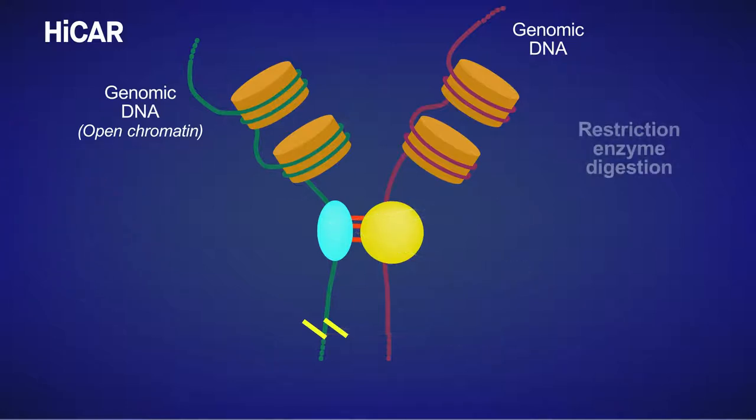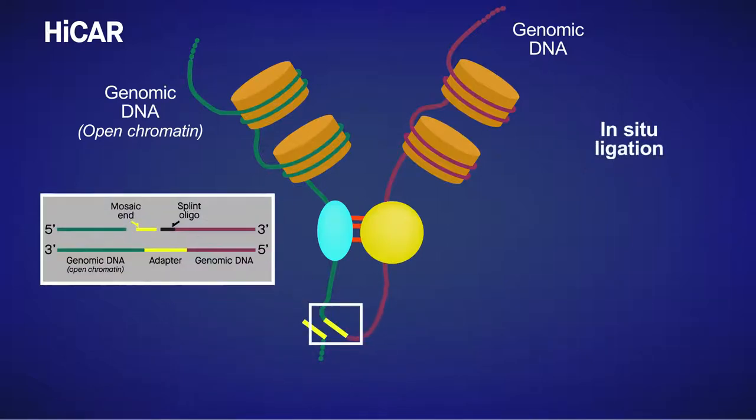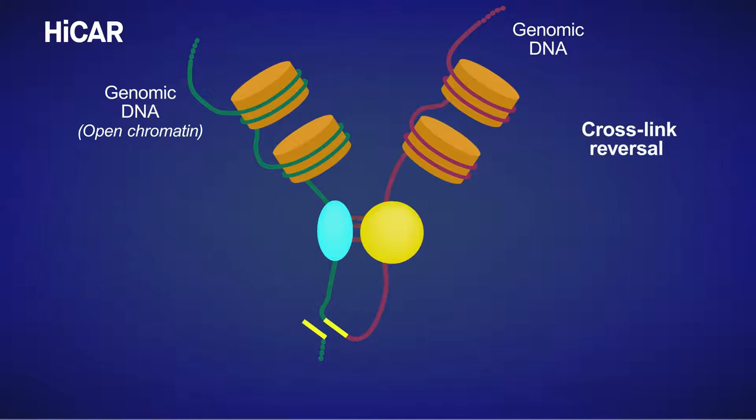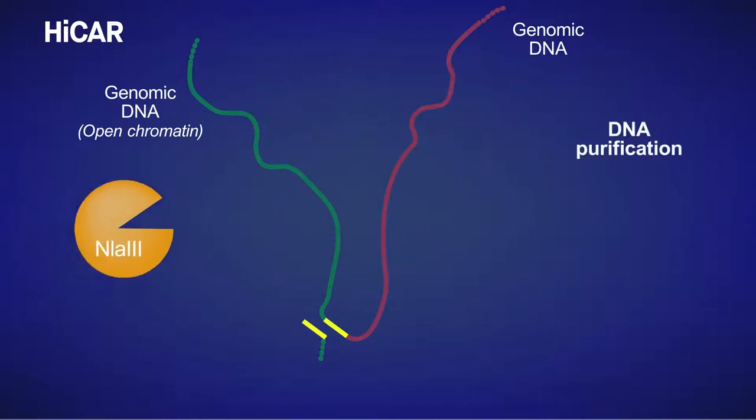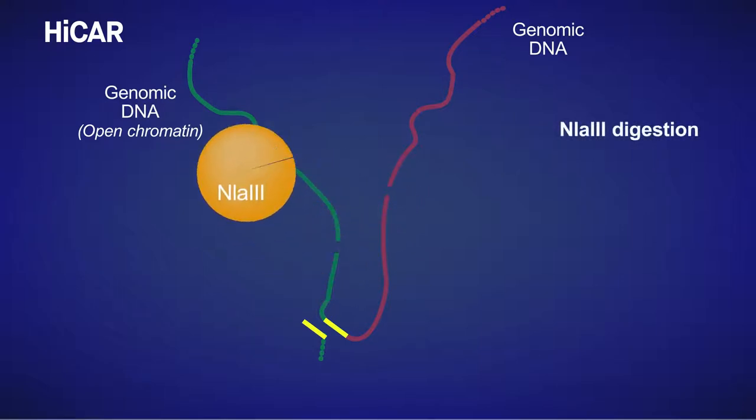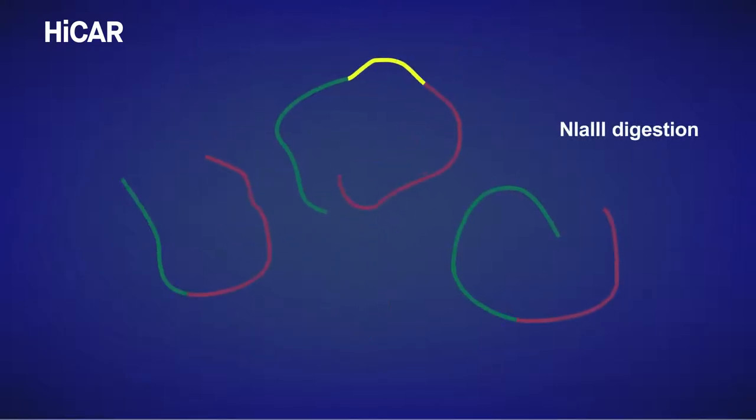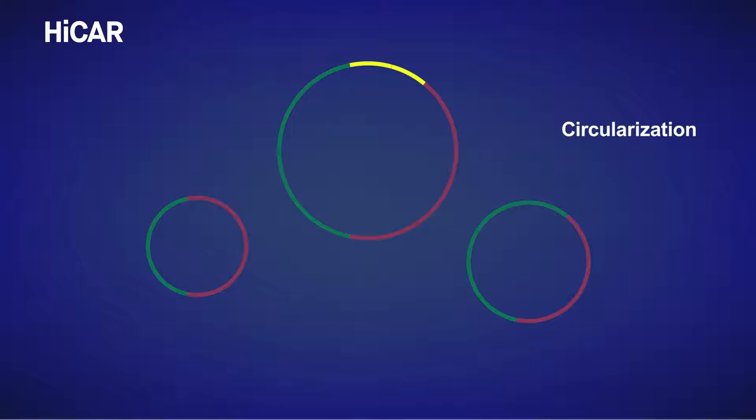After tagmentation, a restriction enzyme digests the DNA into shorter fragments, followed by proximity ligation to ligate the TN5 adapters to their nearby genomic DNA. Next, the cross-links are reversed. The purified DNA is linearized by digestion with a second restriction enzyme and then circularized by intramolecular ligation.